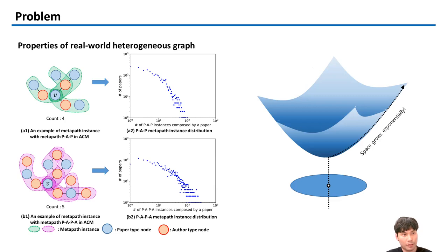The left figure illustrates the power-law structures included in the ACM dataset. In figures A2 and B2, we can see the number of nodes grows exponentially.